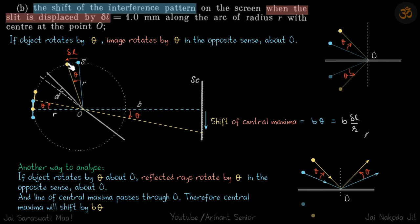Let's deal with the angle instead of the distance. If the displacement is delta L, let's say the slit is rotated by an angle theta. So what we have is: mirrors are at rest and the object is rotated by an angle theta.